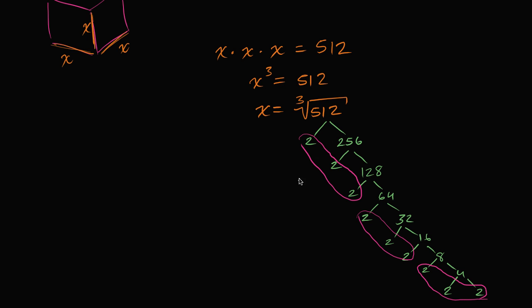we could say that 512 is the same thing as 2 times 2 times 2, which is 8, times 2 times 2 times 2, which is 8, times 2 times 2 times 2. So 512 is the same thing as 8 to the 3rd power.